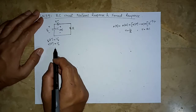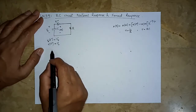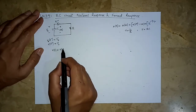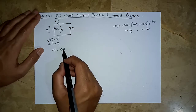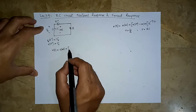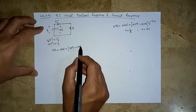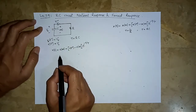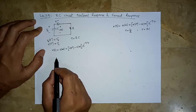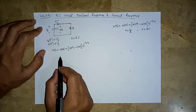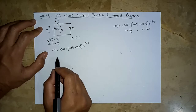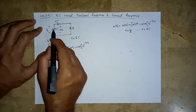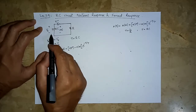Since the capacitor resists sudden changes in voltage, we now want to find the expression for V(t). Applying the general solution: V(t) equals the final value at infinity, plus the initial value minus the final value, times e raised to the power minus t over tau. Here tau is RC. For the final value, we redraw the circuit. We know that when a capacitor is left in a DC circuit for a long time, it will ultimately open up, because it is just two plates.